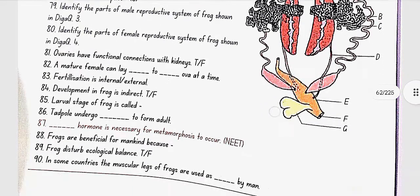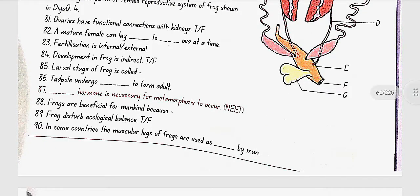Ovaries have functional connection with kidneys. No, false. A mature female can lay 2500 to 3000 ova at a time. Fertilization is internal or external? It is external. Development in frog is indirect. Yes, this is true. Larval stage of frog is tadpole. Tadpole undergo metamorphosis to form adult.